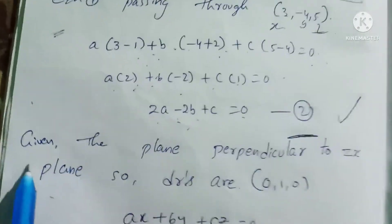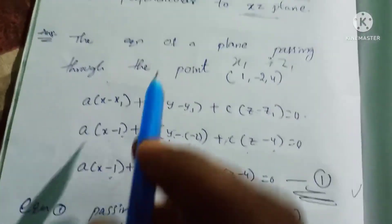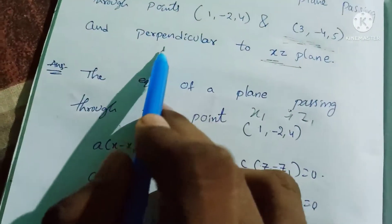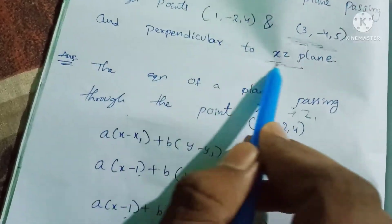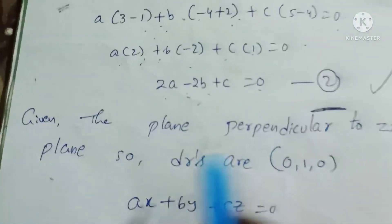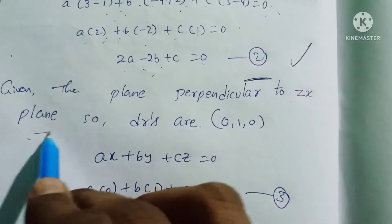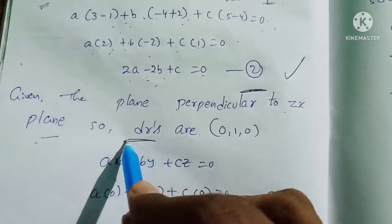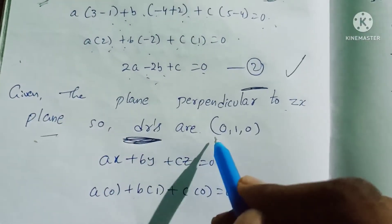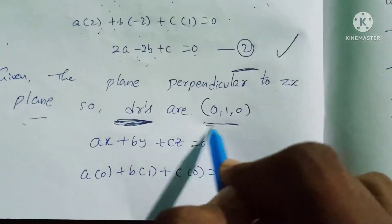Given that the plane is perpendicular to the xz plane, the direction ratio of the xz plane is (0, 1, 0). Using the perpendicularity condition, the normal satisfies a·0 + b·1 + c·0 = 0, which means b = 0.